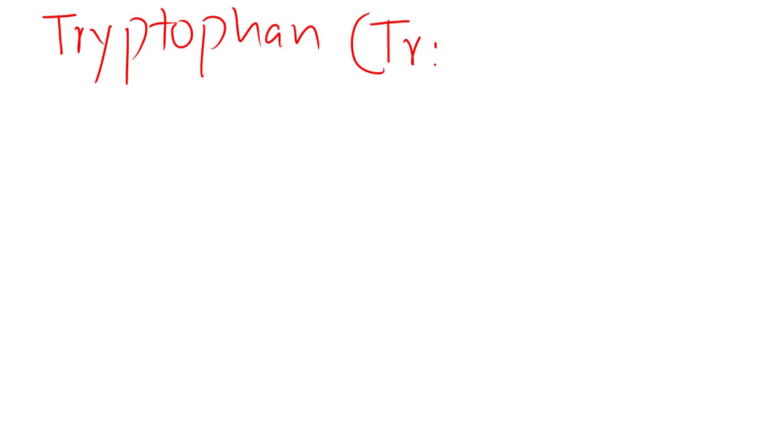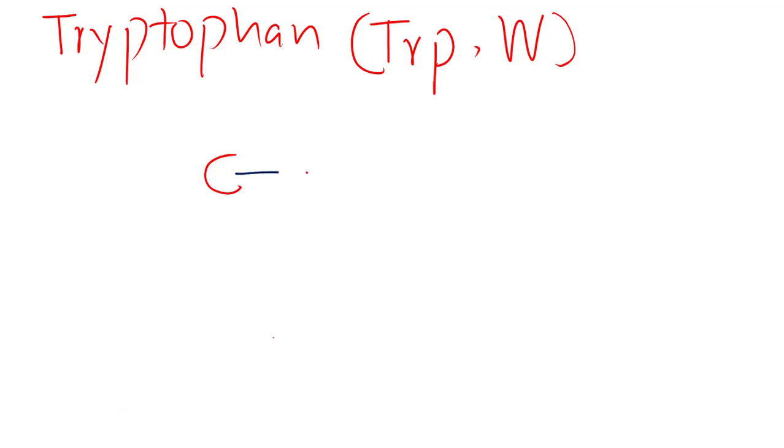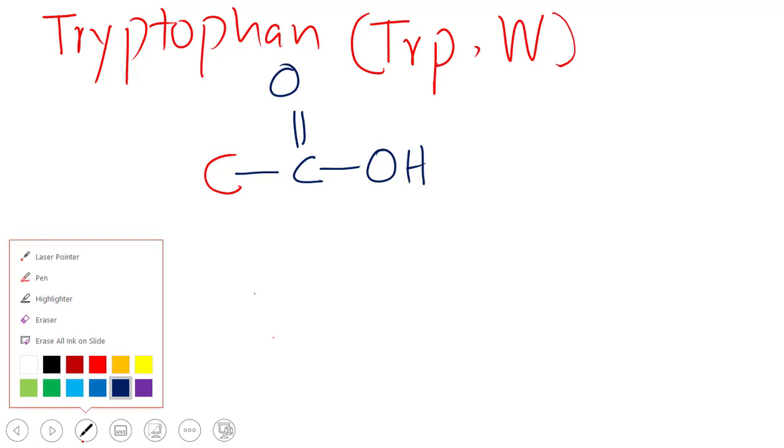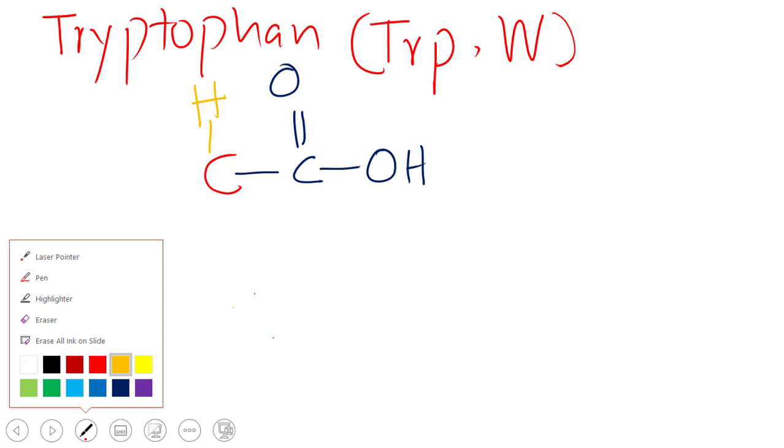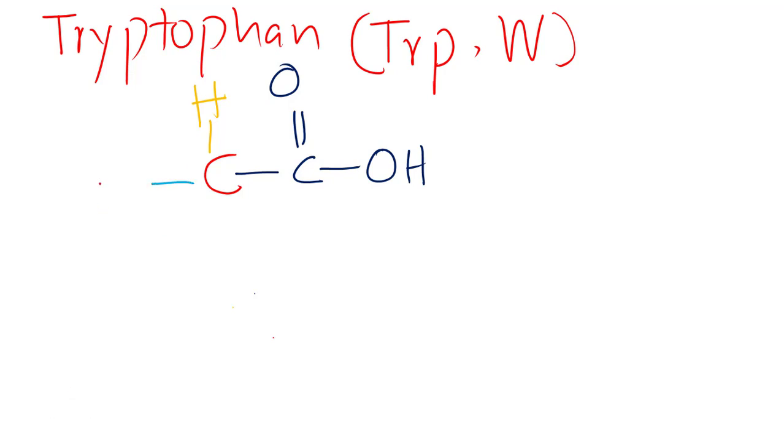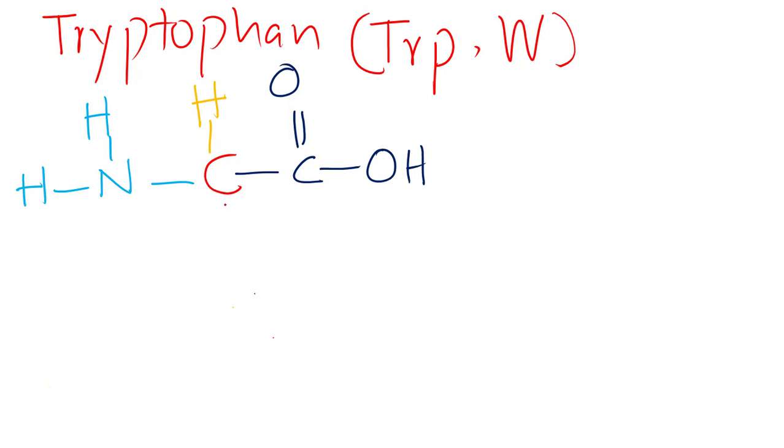Its three-letter symbol is TRP and single-letter symbol is W. So this is our alpha carbon, and with the alpha carbon we are going to draw the carboxylic group, and with the carboxylic group in place, hydrogen, and then along with hydrogen let's draw the amino group. And finally the side chain R. Now this is an aromatic but it starts with CH2. So this is CH2, and now the side chain in which there are two double rings, a five-cornered ring.